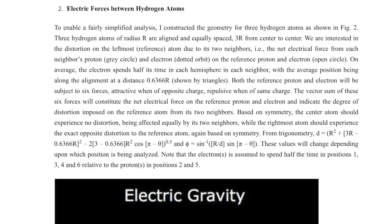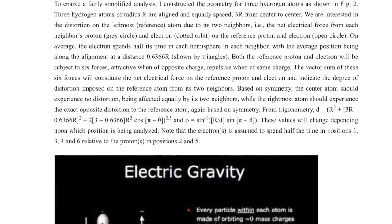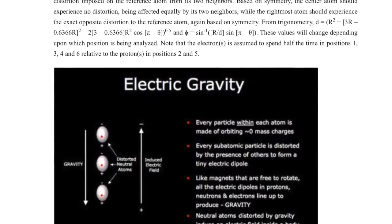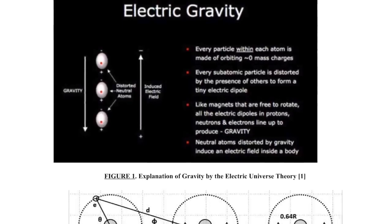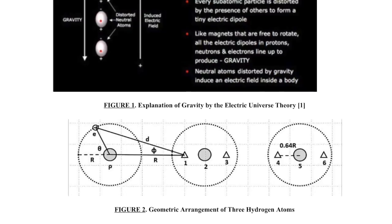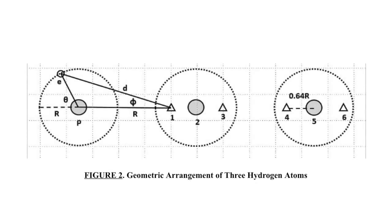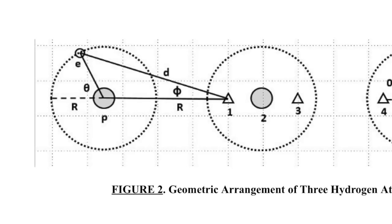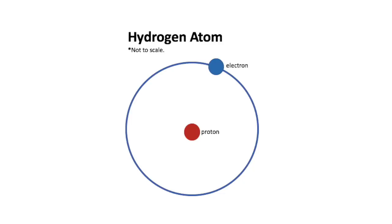What I tried to do is I took the diagram from the Electric Universe theory of the three atoms. I took three hydrogen atoms for simplicity. Three hydrogen atoms of radius r are aligned and equally spaced a distance of three r, r being the radius of the hydrogen atom, from center to center. We are interested in the distortion on the leftmost, which is the reference atom, due to its two neighbors. That is the net electrical force from each neighbor's proton, shown as a gray circle, and the electron, shown as a dotted orbit. This is a classical representation of the atom, the Bohr atom with the electron orbiting.